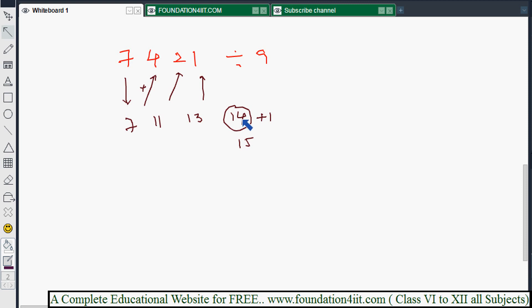Just add 1 to get 15. The important thing is the last place is the remainder. 14 would never be a remainder because the remainder must always be less than 9. Since 14 has one 9, we add that 1 to the previous digit and write 15. Now we have 7, 11, 13, and 15, all two-digit numbers. So we need to apply the balancing rule.